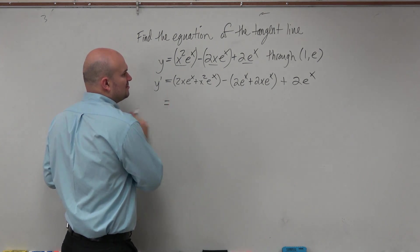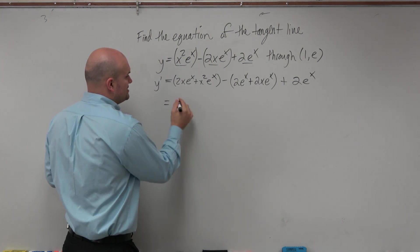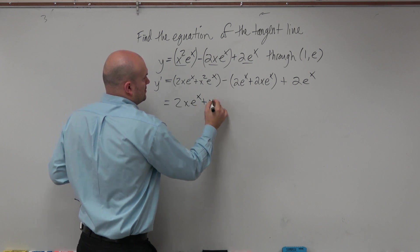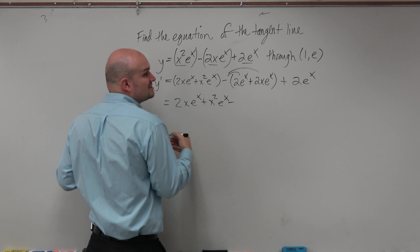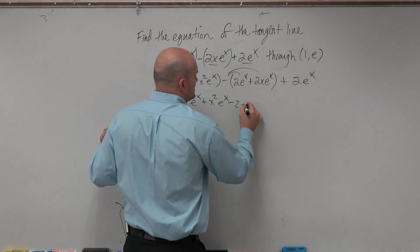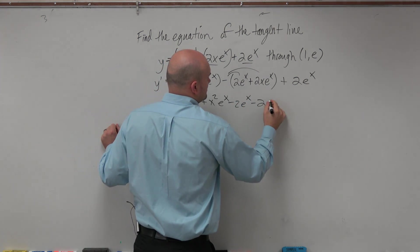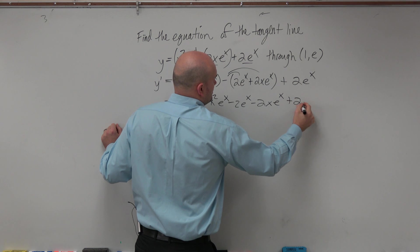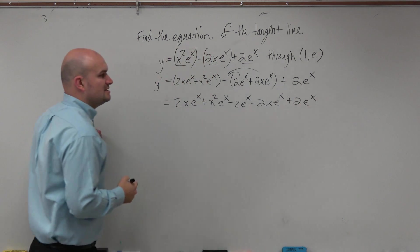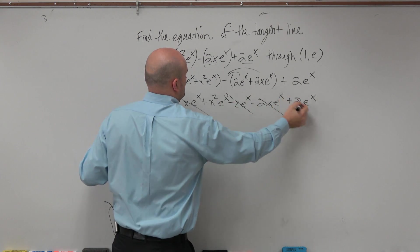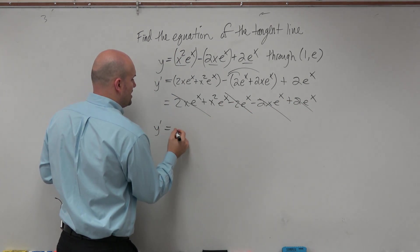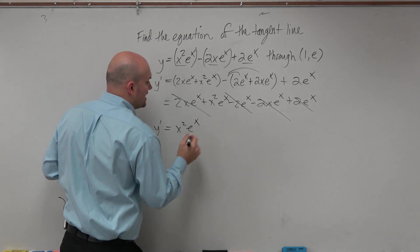So now let's simplify this without our parentheses. The only important thing about the parentheses is knowing I have to distribute. This is kind of important, because look what happens. So therefore, I'm just left with y' = x²e^x.